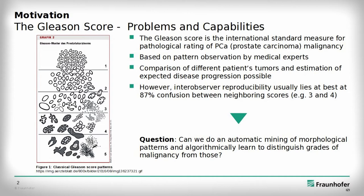But the system obviously has a subjective aspect, which makes it biased and prone to a degree of uncertainty. This uncertainty results in an inter- and intra-observer reproducibility of 87% at best. That means that even a grading by an expert pathologist with years of experience may not be reproducible by another pathologist with the same expertise, or even by himself. For the patient, this increases the risk of not getting the best therapy, as well as the risk of suffering from negative post-operative after-effects. As the Gleason grading is already based on morphological structures, computational image analysis seems to be a good approach, and therefore we asked: can we do automatic mining of morphological patterns and algorithmically learn to distinguish grades of malignancy from those?